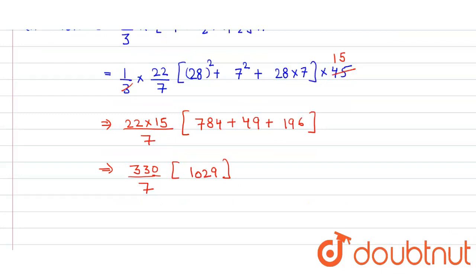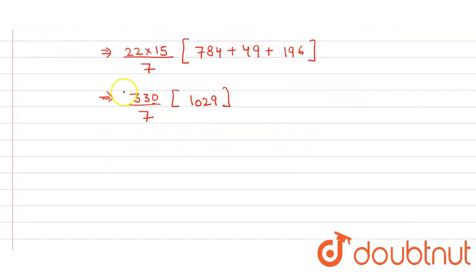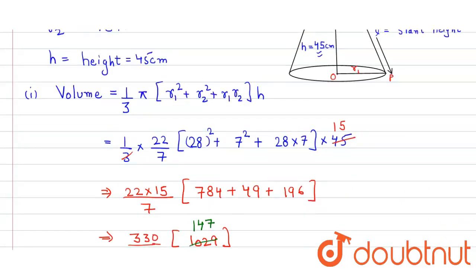Here we get 330, and in bracket when we sum all these we get 1,029. So here on further simplifying, this 7 will cancel this 1,029 and here we get 147.